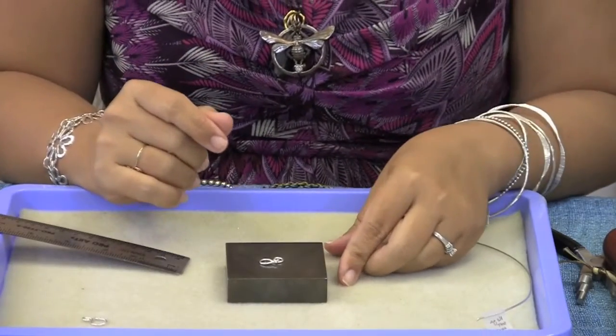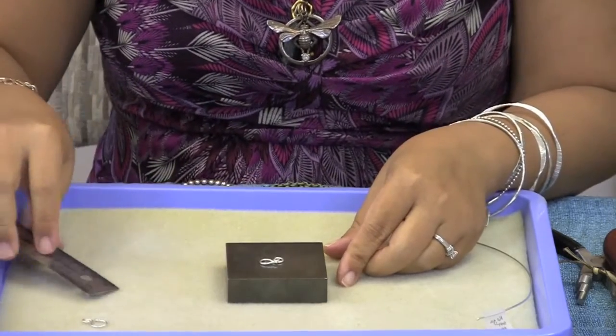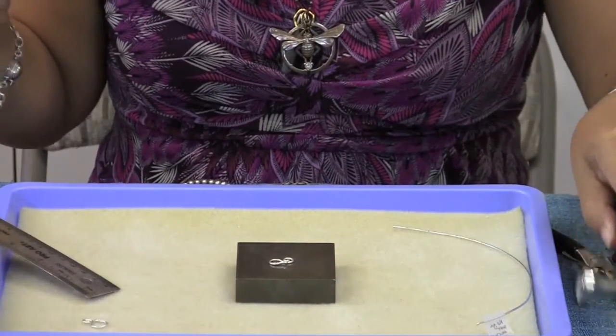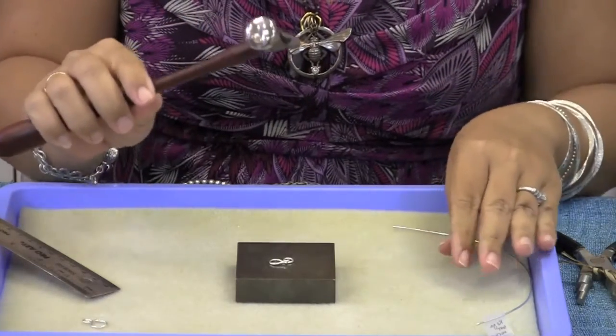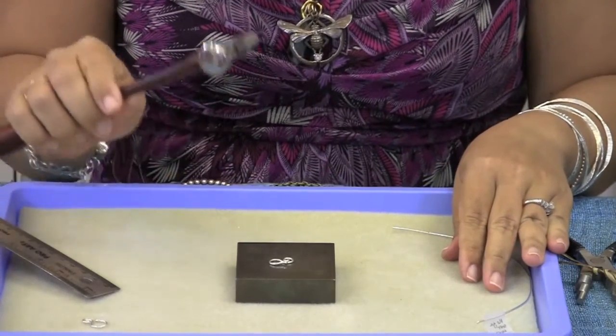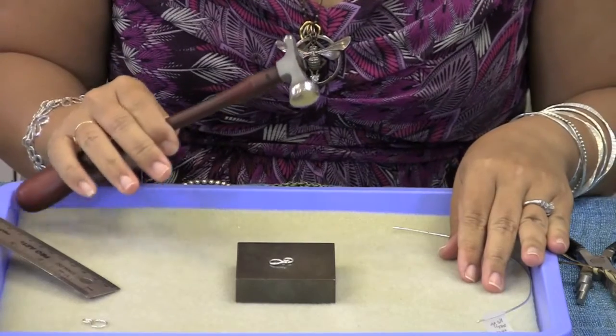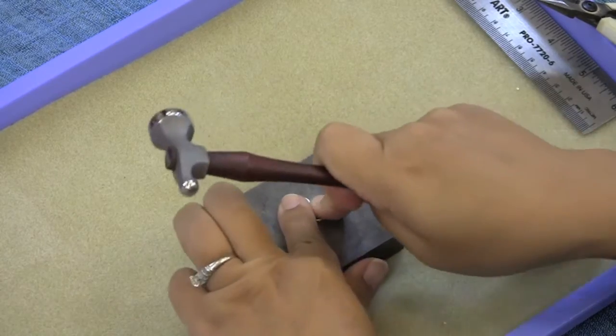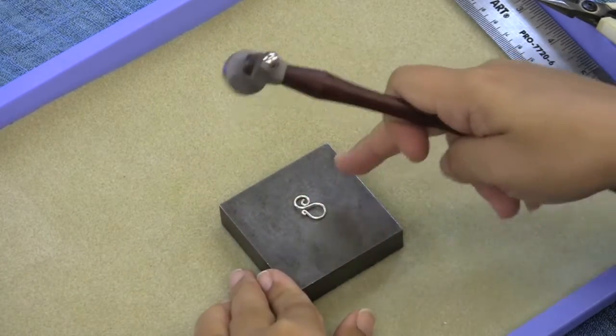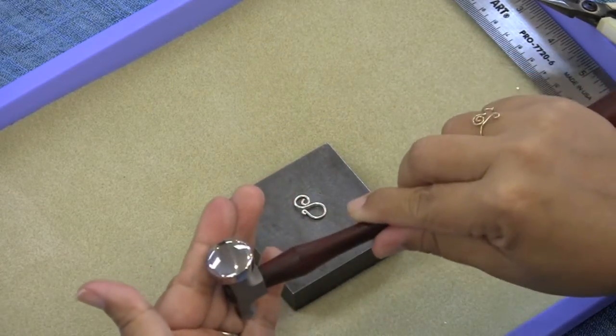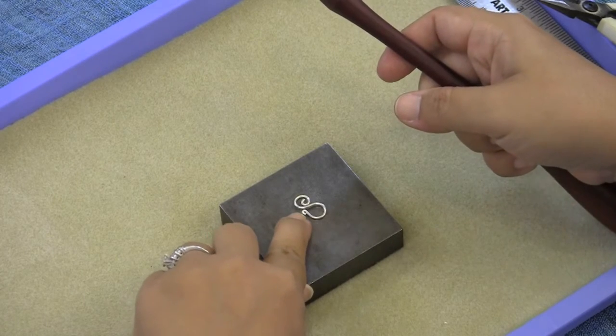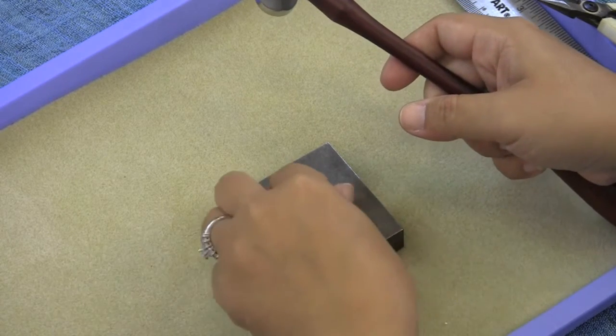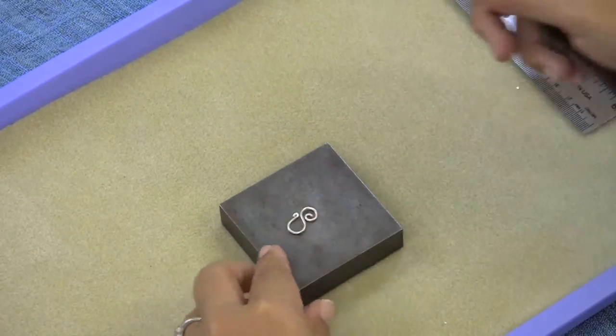Now we're going to hammer our spiral hook clasp. I have my bench block over here and I'm going to use a metal chasing hammer to both flatten my wire and harden my clasp. I'm going to hammer certain portions of my clasp with the metal hammer: the tip of the hook, this curve, and the bottom curve of my spiral.